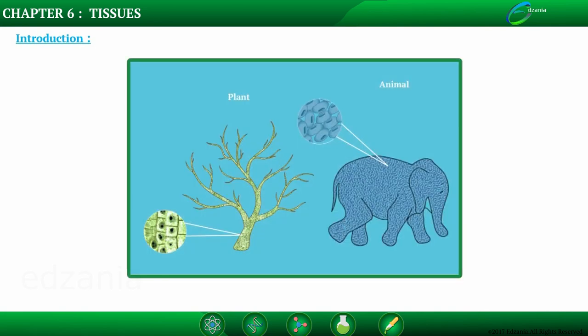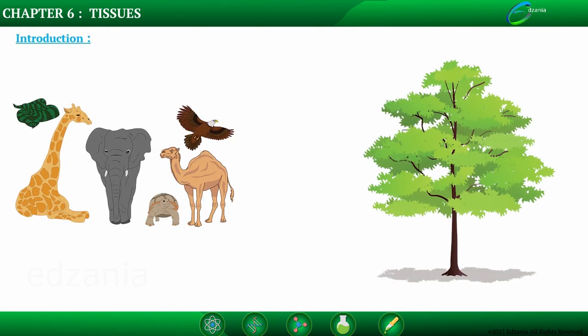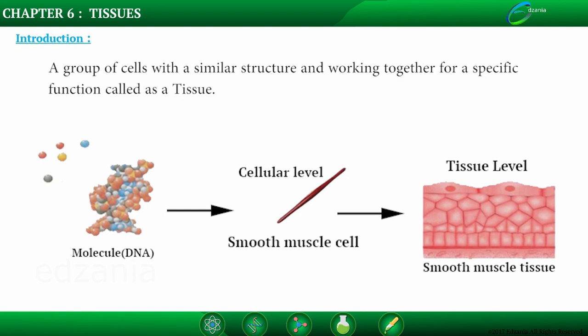Before studying animal tissues, you should know how cells multiply or divide. Both plants and animals are made up of cells. Any multicellular organism starts life with a single cell, then cells multiply. Plants and animals have different structures and hence different types of cells, tissues, and organs. Many cells that perform the same function come together to form a tissue. A group of cells with a similar structure working together for a specific function is called a tissue.